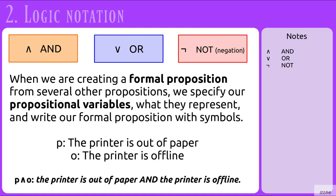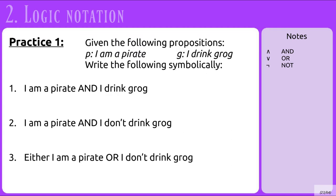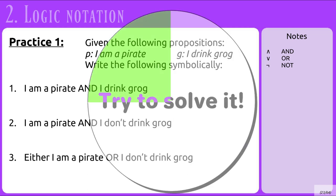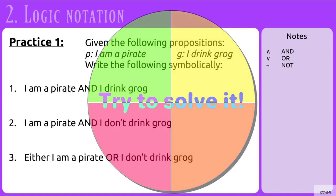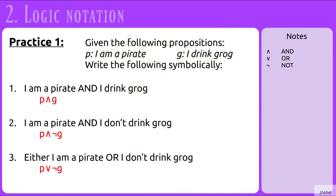For example, if P represents 'the printer is out of paper' and O represents 'the printer is offline,' then we can write P AND O to say the printer is out of paper and the printer is offline. So let's practice. Given P means 'I am a pirate' and G means 'I drink grog,' write the following symbolically: 1. I am a pirate AND I drink grog. 2. I am a pirate AND I don't drink grog. 3. Either I am a pirate OR I don't drink grog. The answers are: P AND G; P AND NOT G; and P OR NOT G.